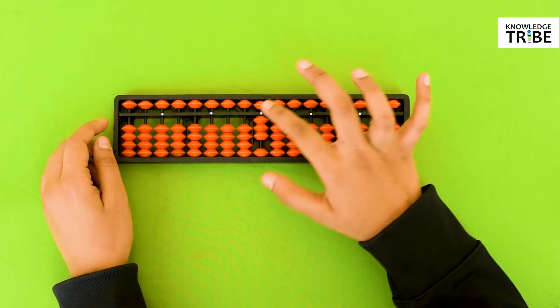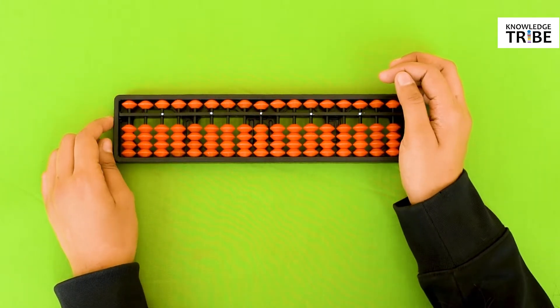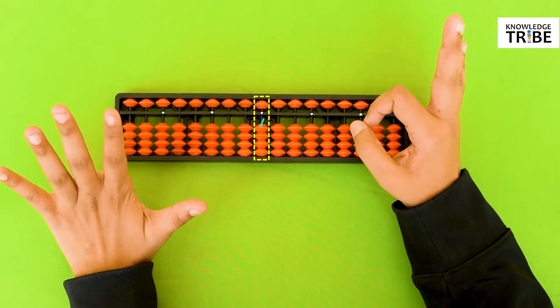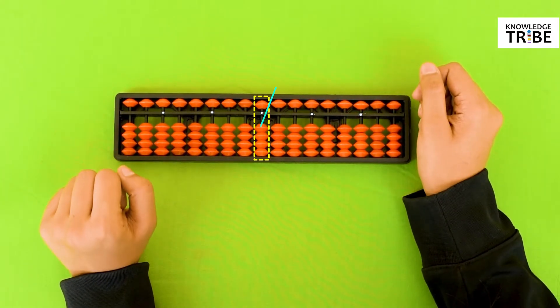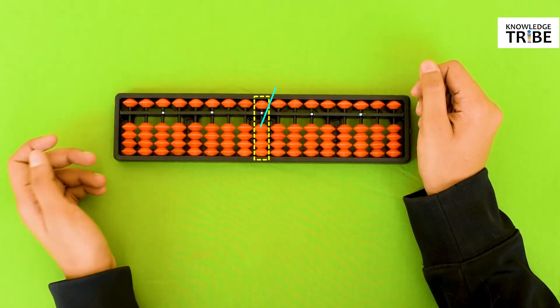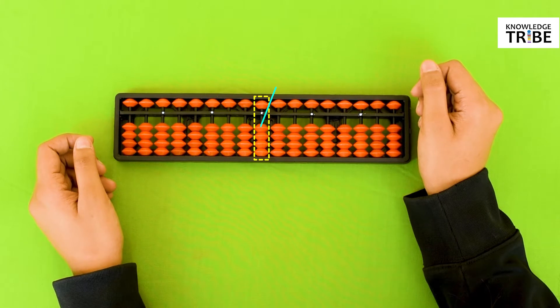Now tell me how to add 5 plus 3. In order to add 5 with 3, we first need to add 5 on the abacus. Tell me where is the 5? Yes! It is the heavenly bead.